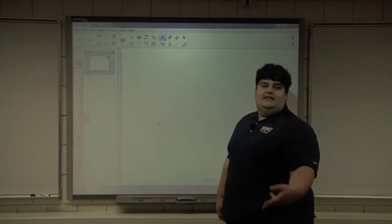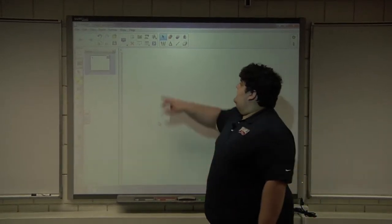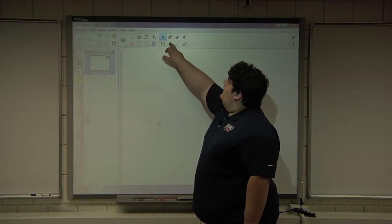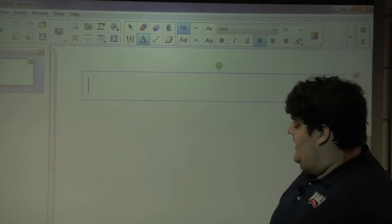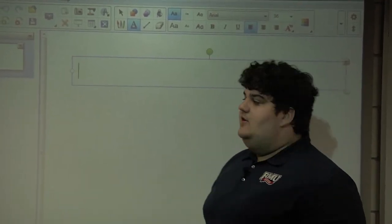The next two things we're going to look at are the text box and the table. The text box is this A icon right at the top. Press on that and then you can drag and size your text box.